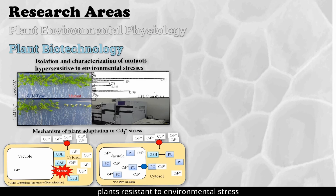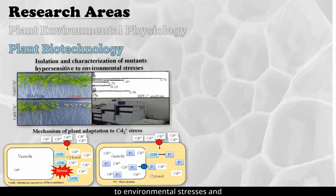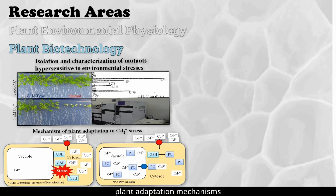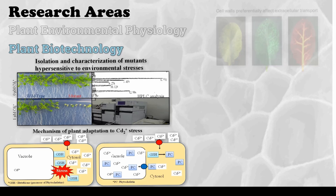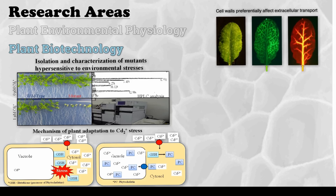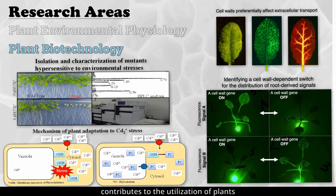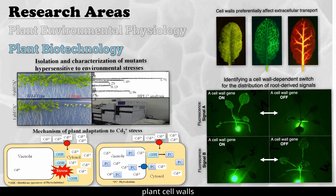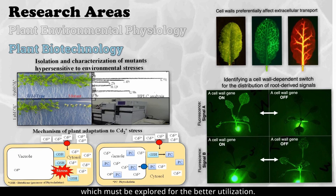In order to develop plants resistant to environmental stress and suitable for phytoremediation, we isolate mutants with altered sensitivity to environmental stresses and characterize the genes responsible for those phenotypes, thereby enhancing our understanding of plant adaptation mechanisms to environmental changes. In addition, plant cell wall engineering contributes to the utilization of plants as a sustainable resource for the production of novel composite materials. Nevertheless, plant cell walls still have some unknown biological functions, which must be explored for better utilization.